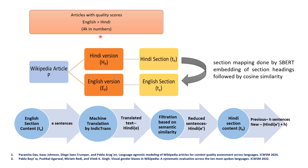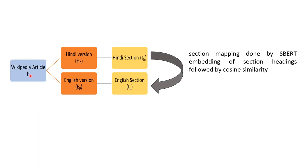Let me explain each block of the framework. Given a topic P, there exist two articles: Hindi version HP and English version EP. We map the sections of Hindi and English articles by taking section embeddings of section headings followed by cosine similarity. If Hindi section TH has the highest cosine similarity with TE, then we assume that both TH and TE are describing similar things about a person.